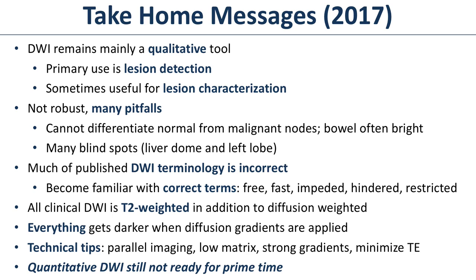Technical tip — we already talked a little about this last lecture and will again. Always, always, always, if you can, use parallel imaging. Use a low matrix. Use strong gradients. Minimize your TE. Quantitative DWI is still not ready for prime time, at least not in the abdomen, at least not 99% of the time.